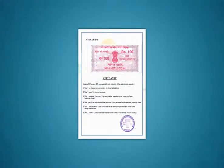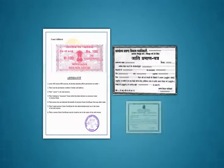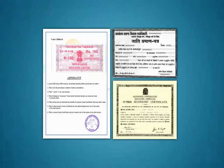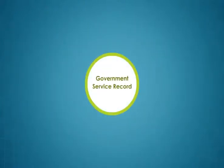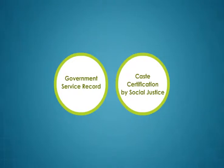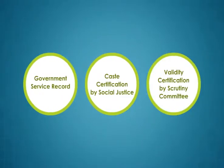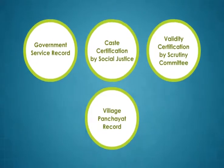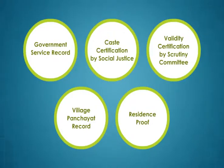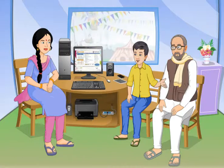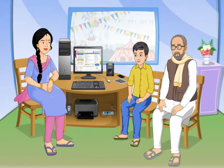An affidavit for caste certificate, the caste proof for your blood relative, an extract of your primary school leaving certificate of you or your father, an extract of birth register of the applicant or father or relatives, an extract of government service record mentioning caste or community category of applicant's father or relative, a document certifying your caste issued by Department of Social Justice, validity certificate of father or relative issued by Scrutiny Committee, a copy of revenue records or village panchayat record, and residence proof prior to the date of notification of the caste certificate. No application fee is required.